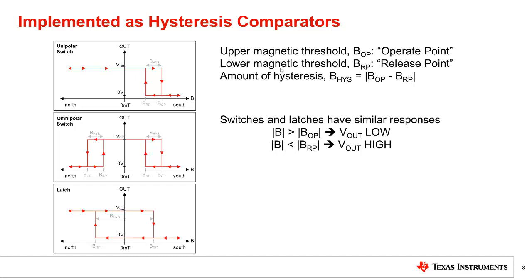Switches and latches have similar responses to the incident magnetic field. The output voltage is low when the input amplitude exceeds B-op and high when the input amplitude is less than BRP.